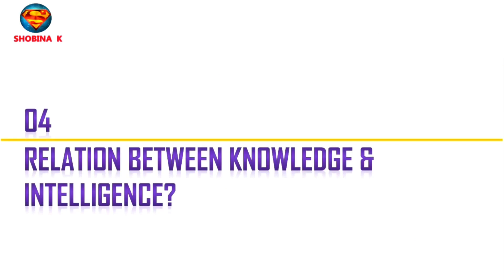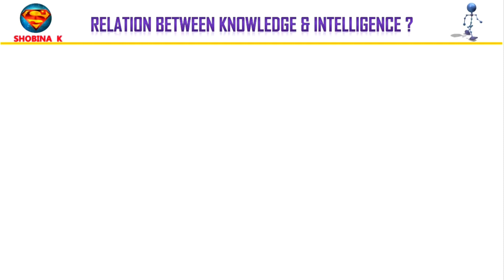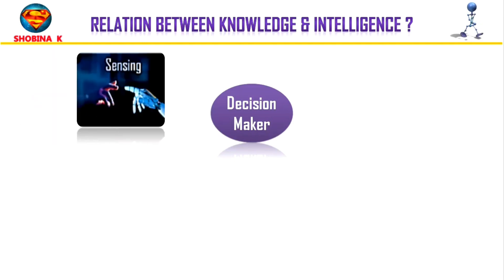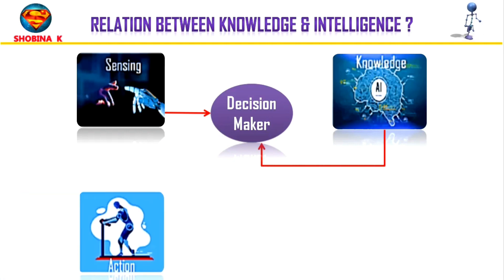Now let's move on and understand the relationship between knowledge and intelligence. In the real world, knowledge plays a vital role in intelligence as well as in creating artificial intelligence. It demonstrates intelligent behavior in AI agents and systems. It is possible for an agent or system to act accurately on some input only when it has the knowledge or experience about that input. If we remove the knowledge component, it will not be able to display any intelligent behavior.